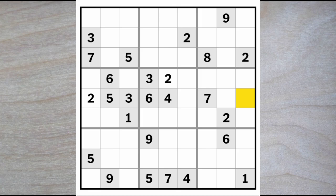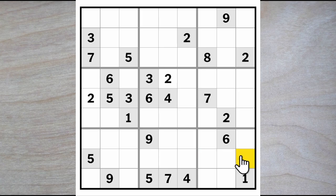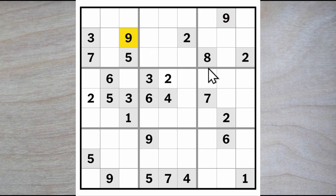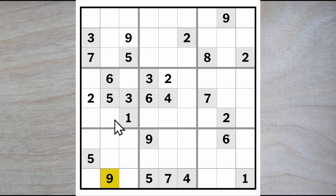We need an 8, 1, and a 9 for these three squares. 9 must go here or here, and here, because this 9 blocks across and this 9 blocks up — so a 9 must go here. Now we have 9 here or here. We have a 5 and a 9, so a 3 and a 7 must go in two of these squares here.